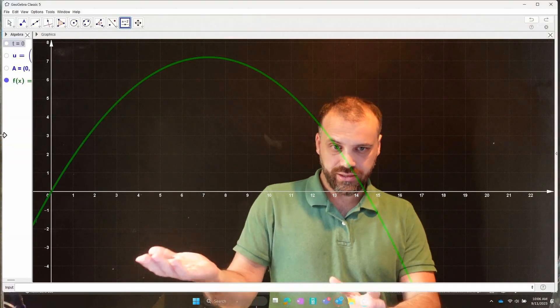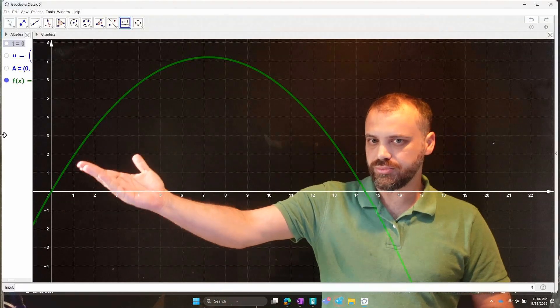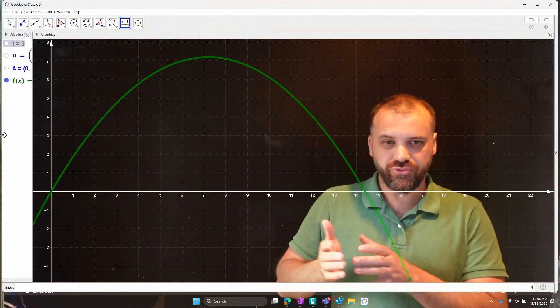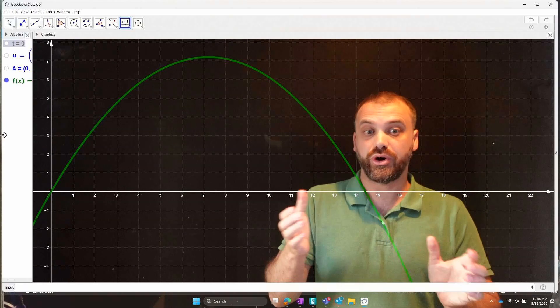So a very big important idea here, we're going to be talking about vector functions. Now you already know what a function is, let's look at a function. This is a function, this parabola here. Now you might have used this before to model someone, say, throwing a ball.